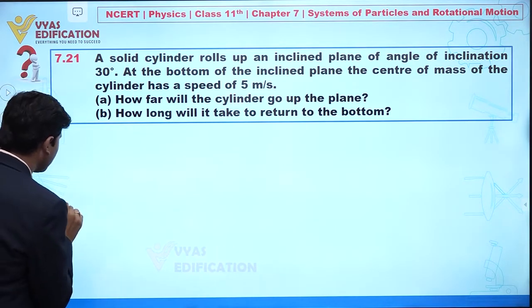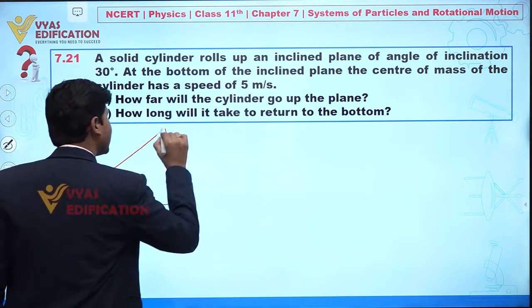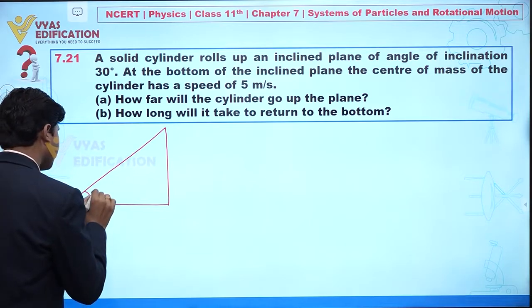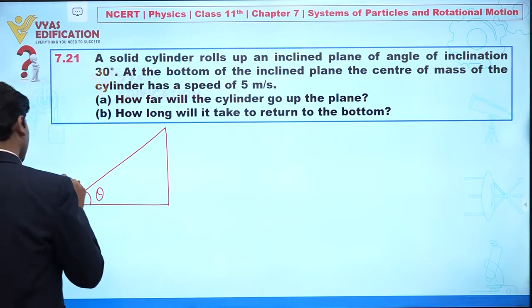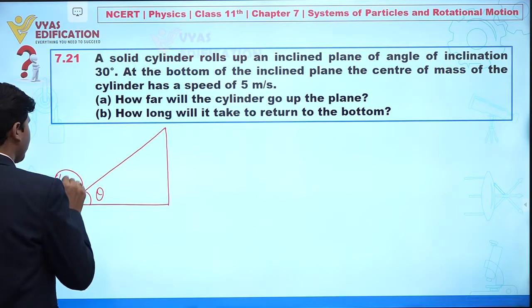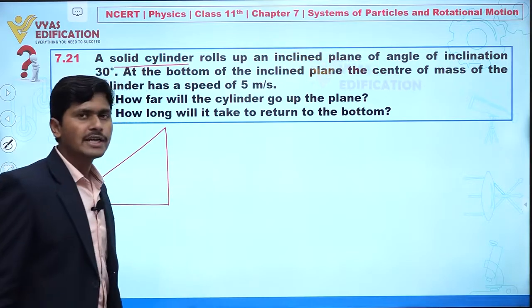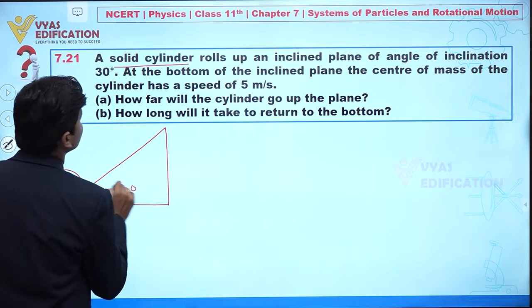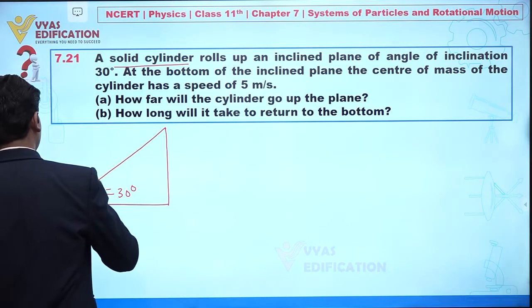Let's suppose this inclined plane is making an angle theta. Here we have a solid cylinder — this is important, it is a solid cylinder. It rolls up an inclined plane of inclination 30 degrees.